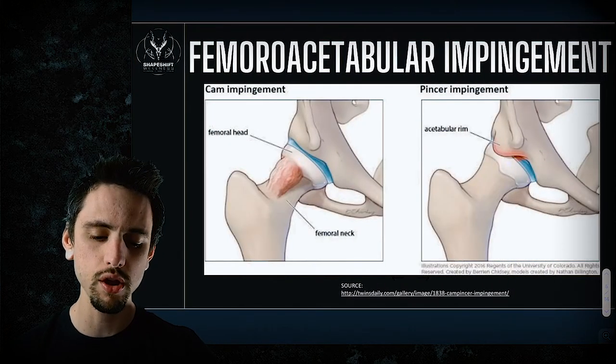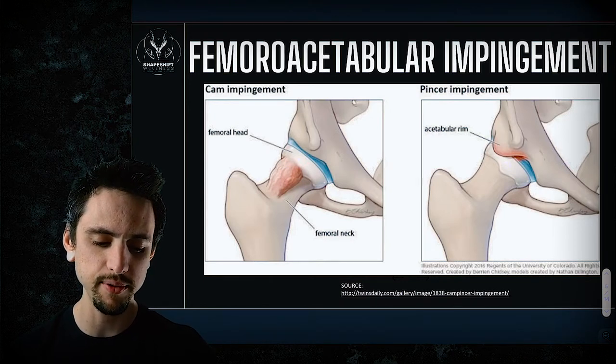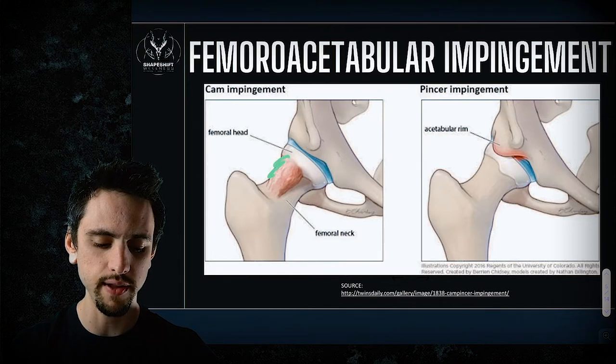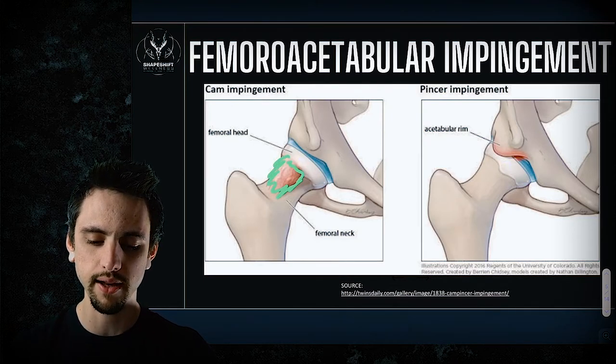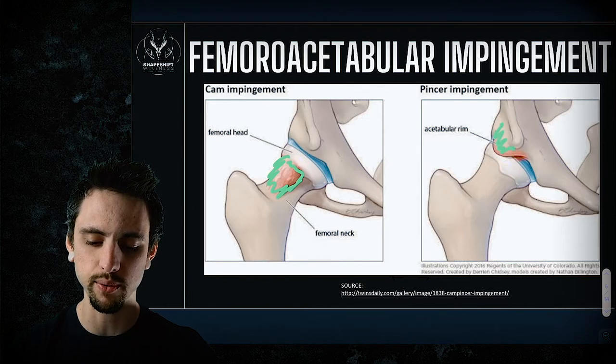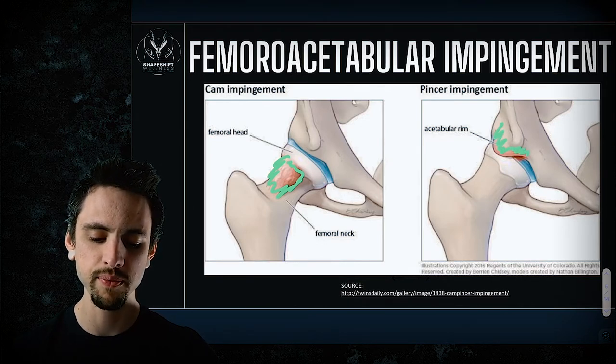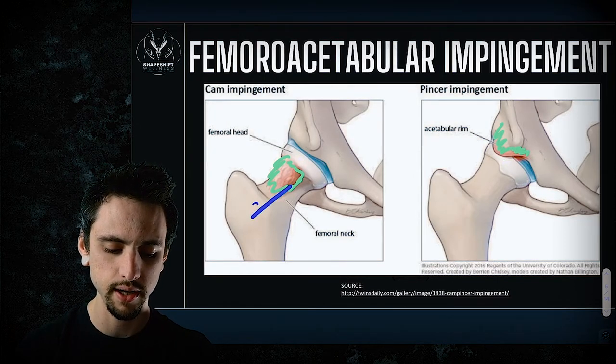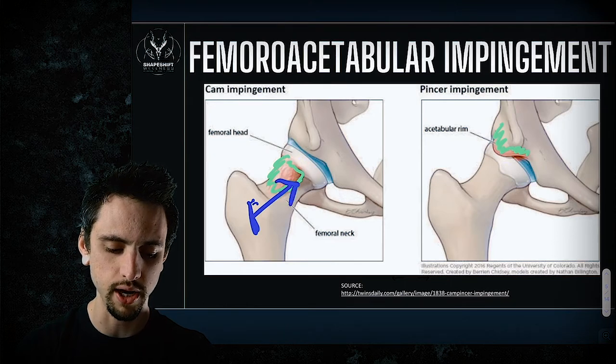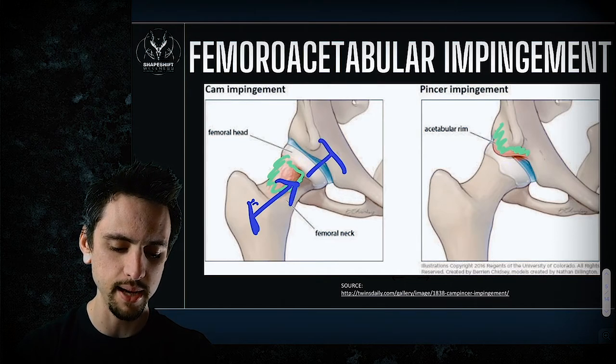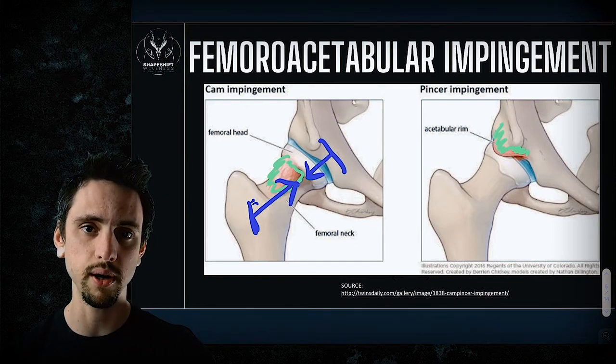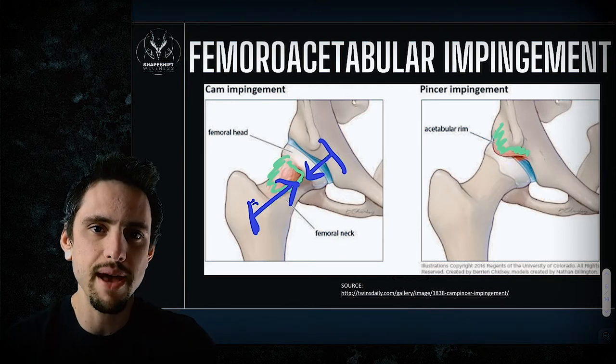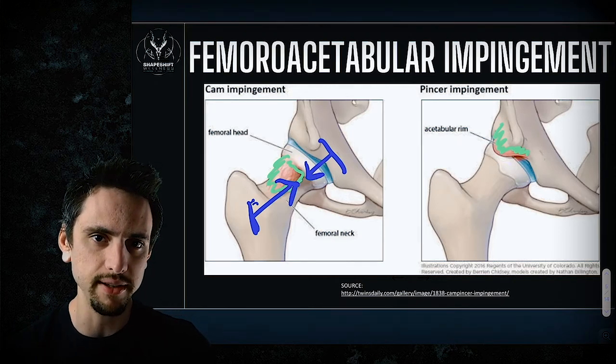So let's talk about femoral acetabular impingement. There are two types of impingement: cam and pincer. Cam is where the femoral neck has a little buildup of bone and pincer is where the actual rim of the acetabulum has a buildup of bone. Essentially, the reason this is important is because if you take this bone here, if you take this and you draw it this way, that essentially is taking your acetabulum and drawing it this way. As those two bones approximate, as they get closer together, there's a geometrical, there's a physical limitation of space.